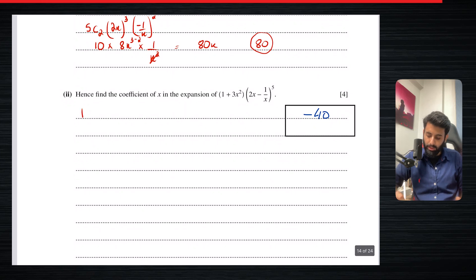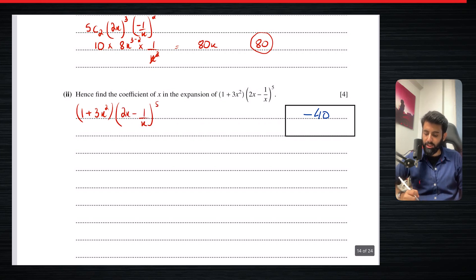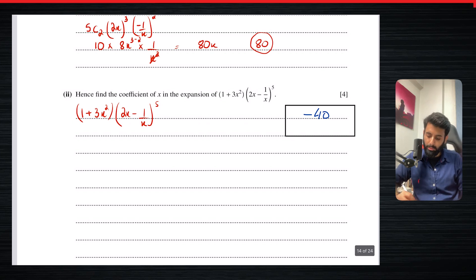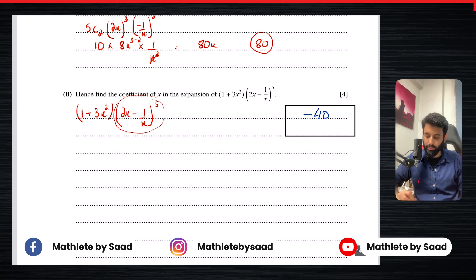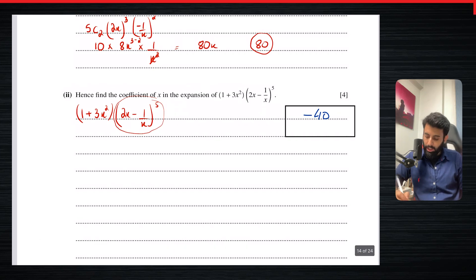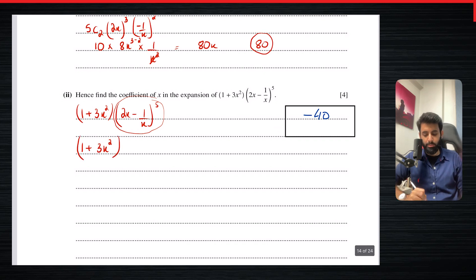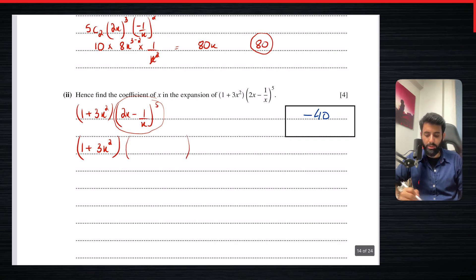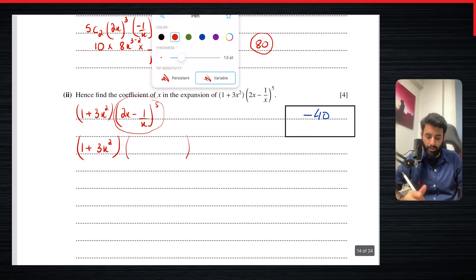Now, questions like these are the ones I'm really looking forward to solving, so you understand what a full-length question can look like. It says: find the coefficient of x in the expansion of (1 + 3x²) multiplied by (2x − 1/x)^5. Your immediate reaction might be to just multiply the 1 by the coefficient of x we found earlier, which is 80x.